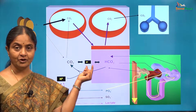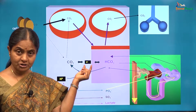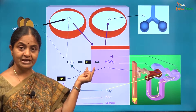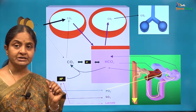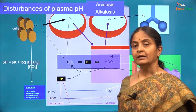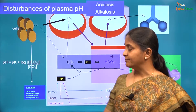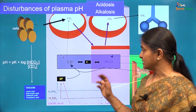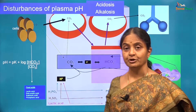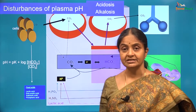Plasma pH is the negative logarithm of its free hydrogen ion concentration. This proton concentration is at 40 nano equivalents per liter, and that is what keeps the plasma or extracellular fluid pH at 7.4. The major determinant of plasma pH is the ratio of bicarbonate and carbon dioxide. As per the Henderson-Hasselbalch equation, pH is pK plus log of bicarbonate to carbon dioxide concentrations. Bicarbonate in plasma is at 24 milliequivalents per liter and carbon dioxide is at 1.2 millimoles per liter. Therefore, the ratio is 20, and that is what keeps the pH at 7.4.